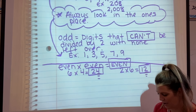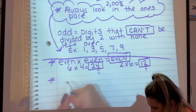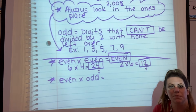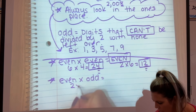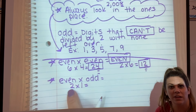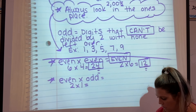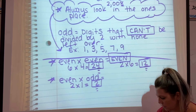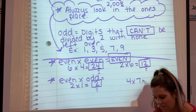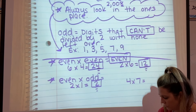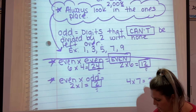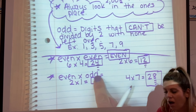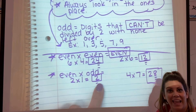What if we do even times odd? Let's pick an even number — let's do two times one. We've got our even and our odd. Two times one equals two, and two is even. Let's do a bigger one: four times seven. Four times seven equals 28 — always look in the one's place. Do you see the pattern? Even times an odd is always going to equal an even number.